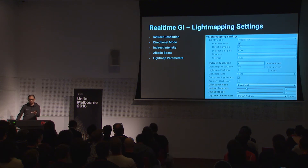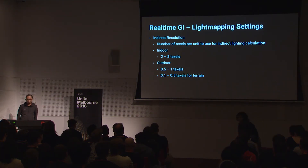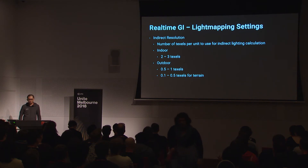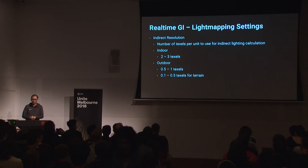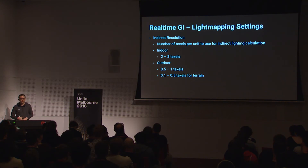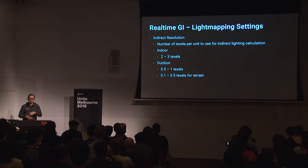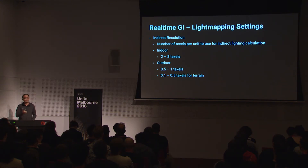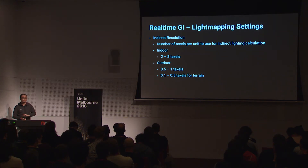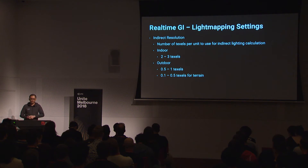Indirect resolution determines the number of texels per unit used for indirect lighting calculation — think of it as the resolution of your light map. For indoor scenes, you'd typically use two to three texels, sometimes higher. For outdoor scenes, 0.5 to 1 texel is sufficient. For terrain, you can go as low as 0.1 to 0.5.